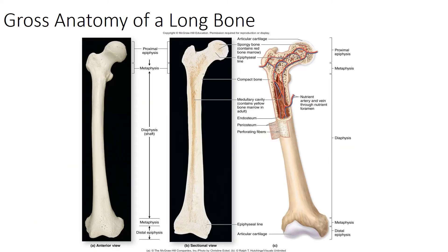When we look at a long bone, there are characteristics that all of these share. The first is the diaphysis, commonly known as the shaft of the bone — the elongated cylindrical shaft. Within the diaphysis we find the medullary cavity, which is the hollow portion. In adults, this is where we find yellow bone marrow for storage of lipids and minerals. However, in young children, this is red and responsible for production of red blood cells.